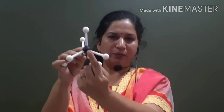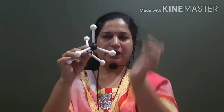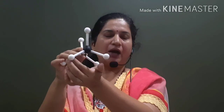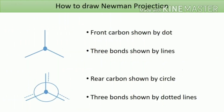When we observe the molecule from the front, what we can see is the front carbon and the three hydrogens attached to it. However, we cannot see the back carbon or the hydrogens attached to it. To represent the Newman projection, the front carbon is shown by a dot with its three bonds as lines, and the rear carbon is shown by a circle with its three bonds as lines starting from the periphery of the circle.